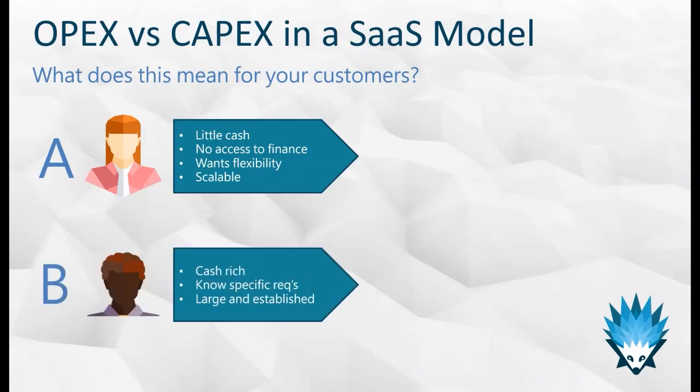Customer B is almost the opposite — a huge, cash-rich business. They know exactly what they want and are largely established. These organizations tend to know exactly what they want to get out of any software product, making them very much the opposite of Customer A.